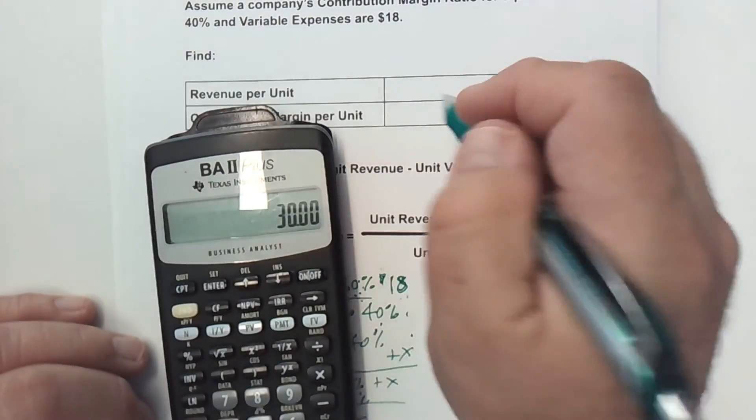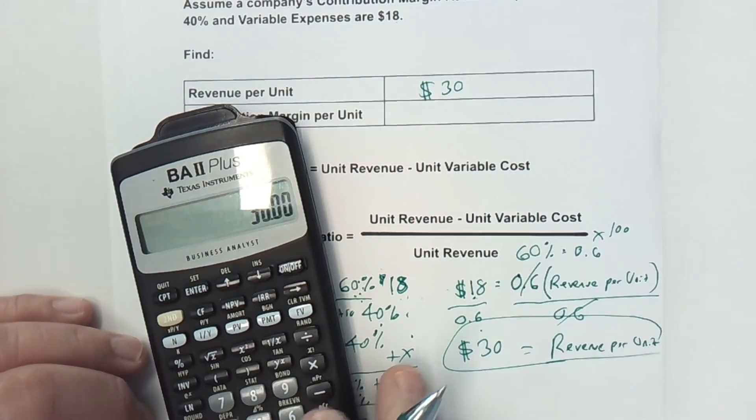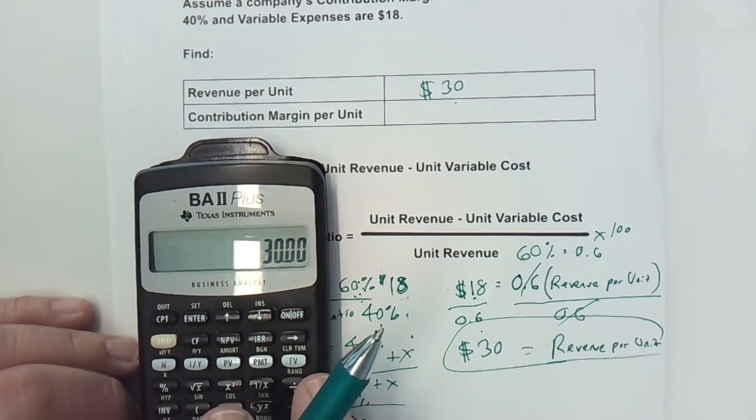That's our revenue per unit is $30. I can put that up here, revenue per unit, $30. So that means we're selling it for $30.